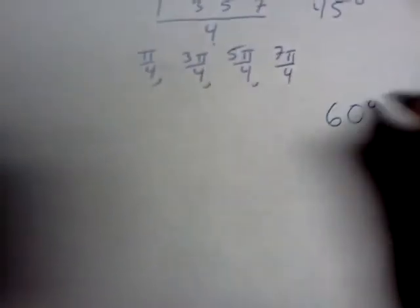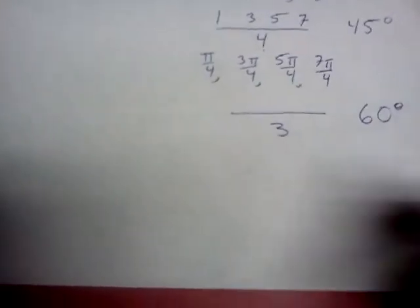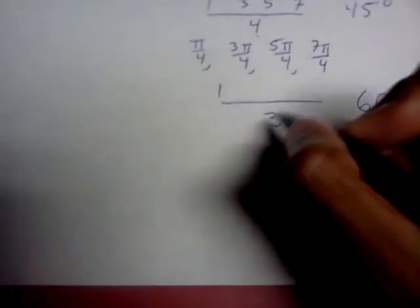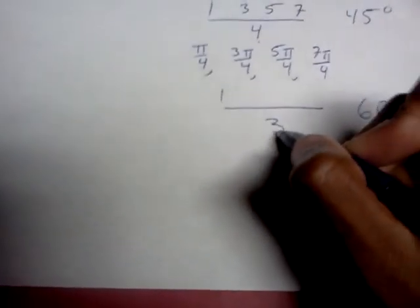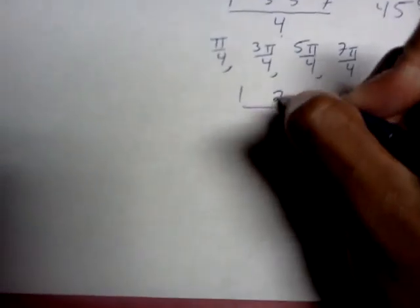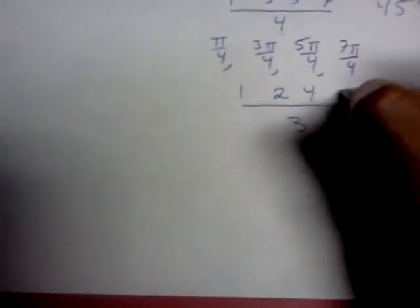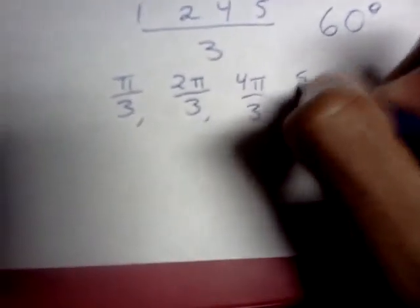Moving on to 60 degrees, the denominator is 3 because the 3 and the 6. And then we start, we'll just write the 1. And then two numbers that sandwich 3 are 2 and 4. 2 plus 3 is 5. And then 4 minus 3 is already 1. So rewriting that with the pi, we get pi over 3, 2 pi over 3, 4 pi over 3, and 5 pi over 3.